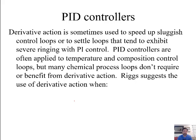In most cases, PI control is sufficient to give good performance for most control loops in the chemical process industry. PID controllers are often used for slower processes such as temperature or composition. But oftentimes the derivative term is not required, and it can actually be detrimental. In many cases, if you're working on a controller set up in PID mode, you can improve performance just by turning off the derivative term, since it's often not applied properly.